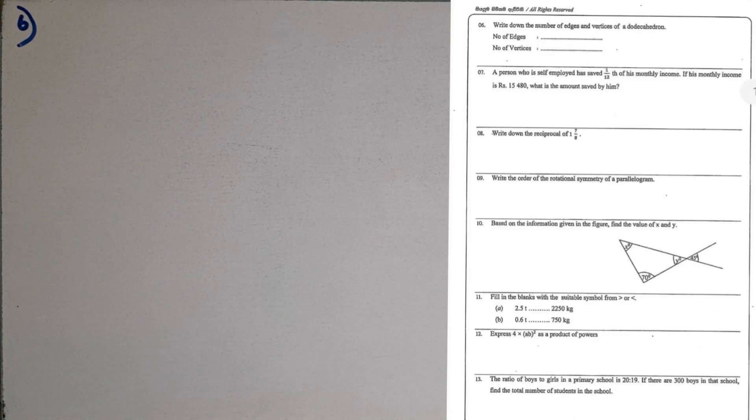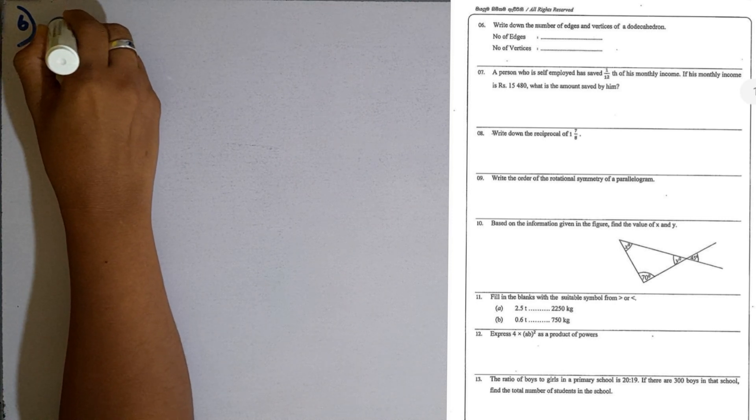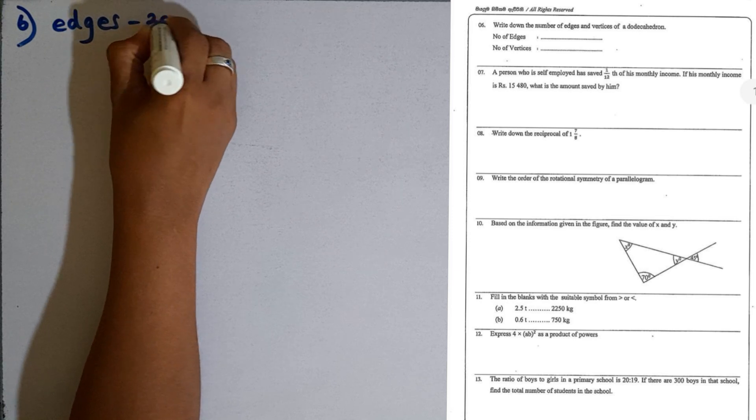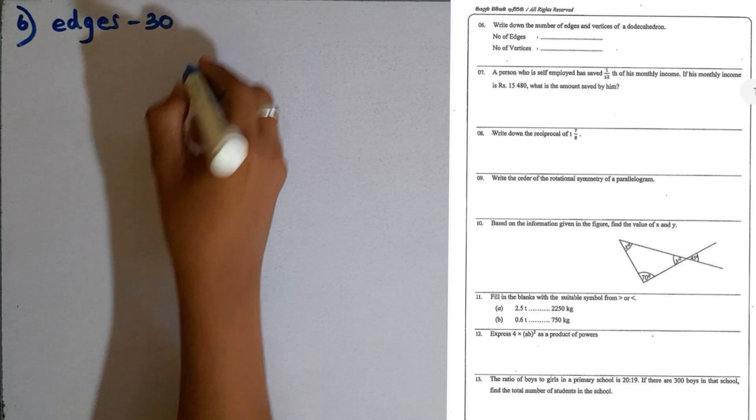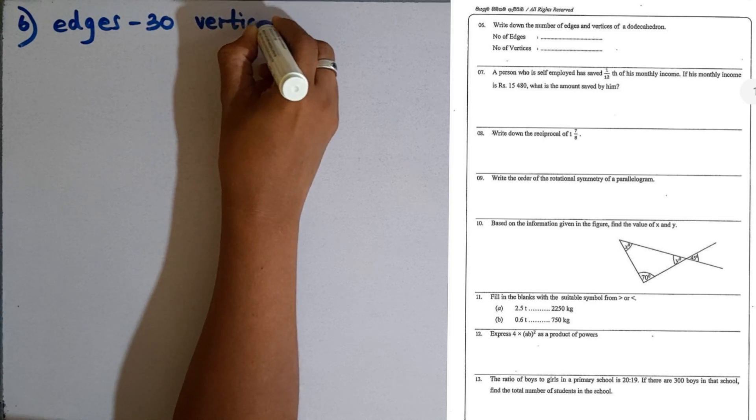Question number 6. Write down the number of edges and vertices of a dodecahedron. There are 30 edges. So number of edges is 30. Number of vertices is 20.